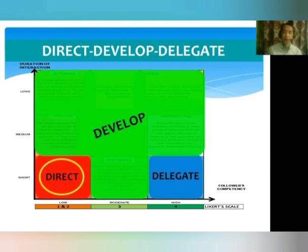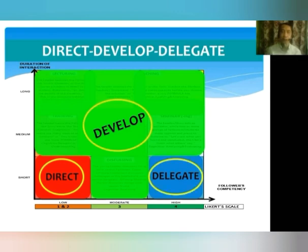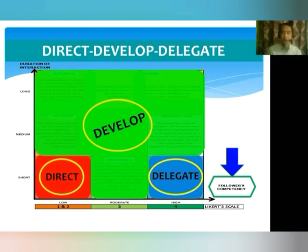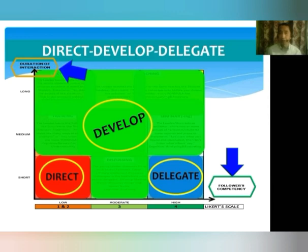First, the direct — in red color. To develop, in green color, and to delegate, in blue color. You can see that on the horizontal axis you have the competency of the followers, and on the vertical axis you have the duration of the interaction.